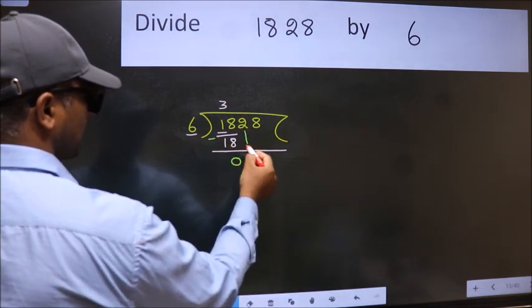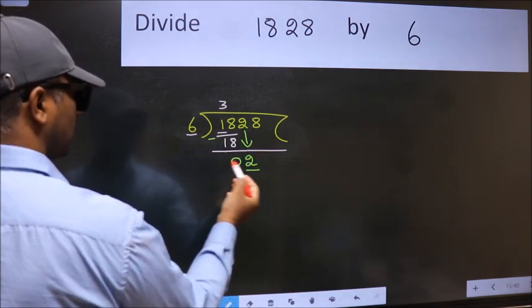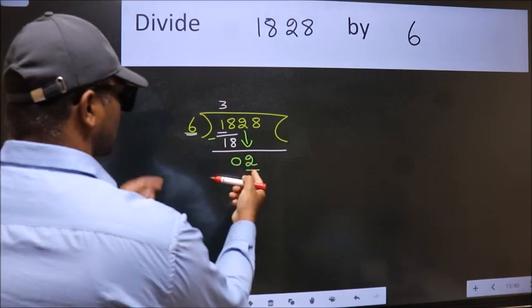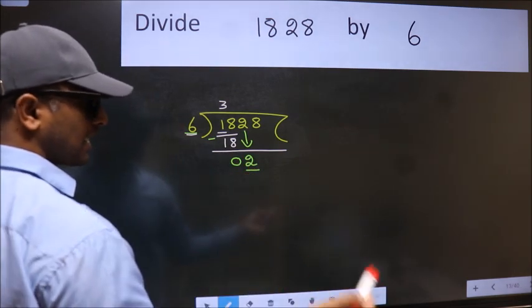After this, bring down the beside number. So, 2 down. Now, here we have 2 and here 6. 2 is smaller than 6. So, we should bring down the second number.